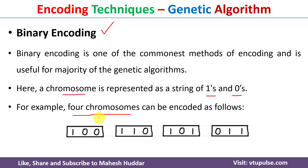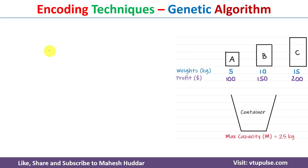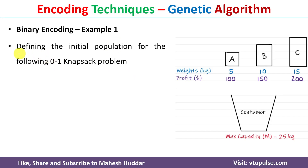Each chromosome contains three genes. For the first chromosome, the first gene is 1 and the remaining two genes are 0. For the second chromosome, the first and second genes are 1 and the third one is 0, and so on. Let's take an example to understand binary encoding — we want to define the initial population for the 0/1 knapsack problem.